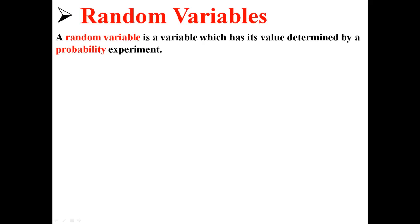So far I've talked about discrete and continuous variables, but now I'm going to talk about discrete and continuous random variables. So first of all, what is a random variable? A random variable is a variable which has its value determined by a probability experiment.